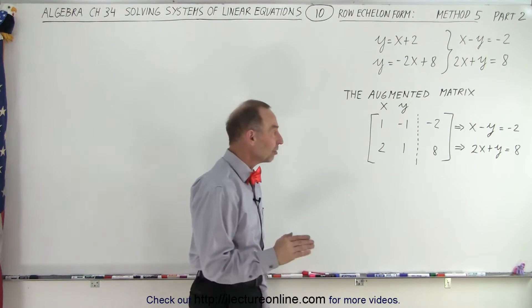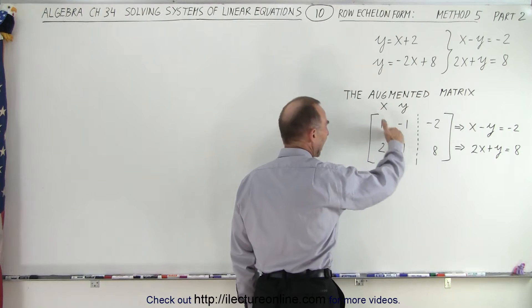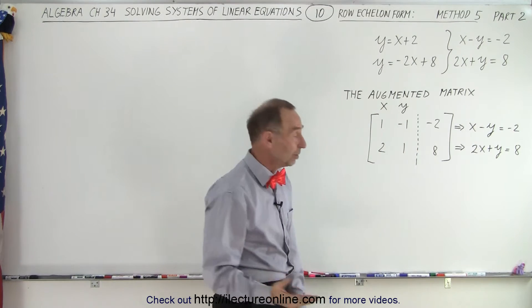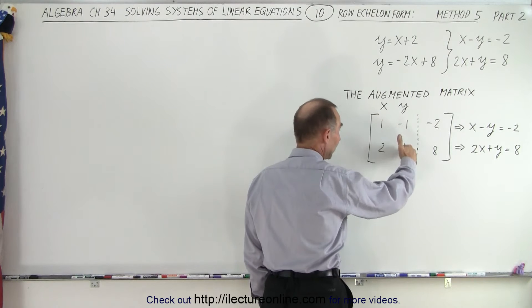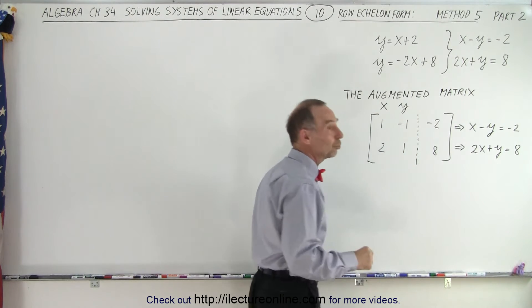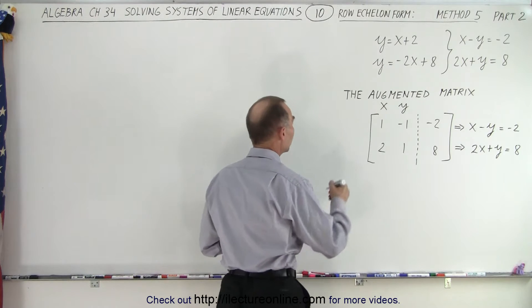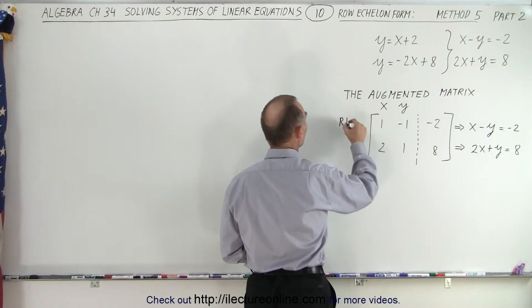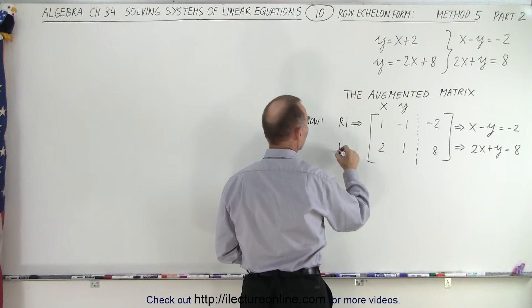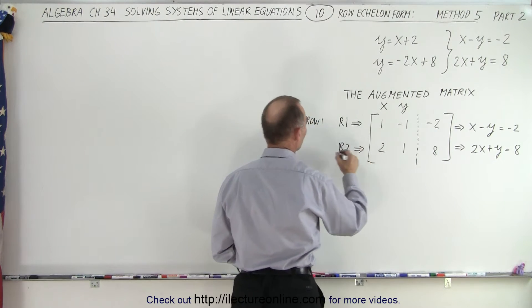The row echelon form wants to get ones across the diagonal and a zero over here. Now we're almost there. Notice that we have ones across the diagonal already but we don't have a zero there. We want to turn that into a zero. This is what we call row 1 and this here is what we call row 2.